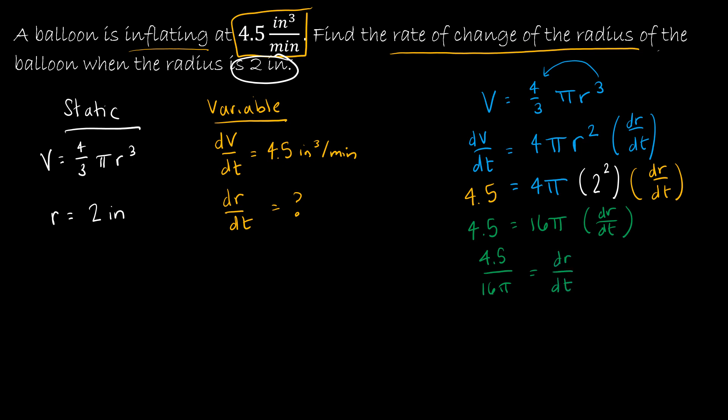So using your calculator, you would find that dr over dt is approximately 0.09. Now, here's where it might be helpful to have some units of measure. 4.5 was cubic inches per minute. And 16π, remember, we just used inches on r. So this is inches, but we squared it. So this is inches squared.